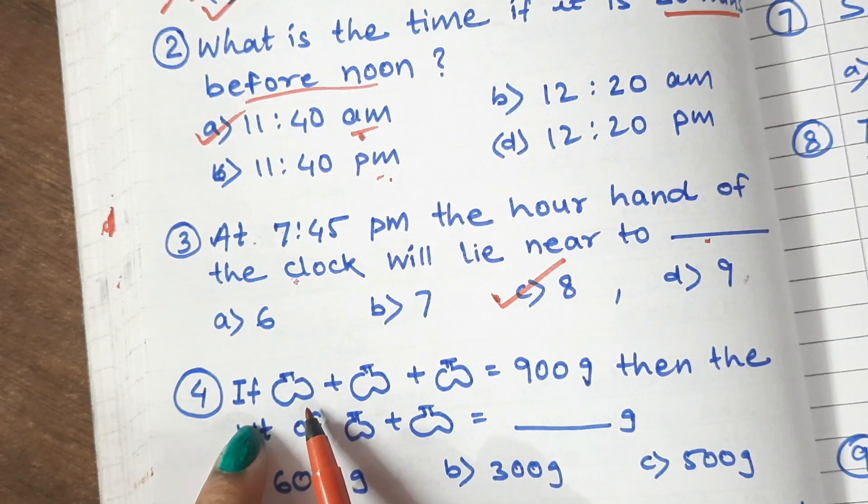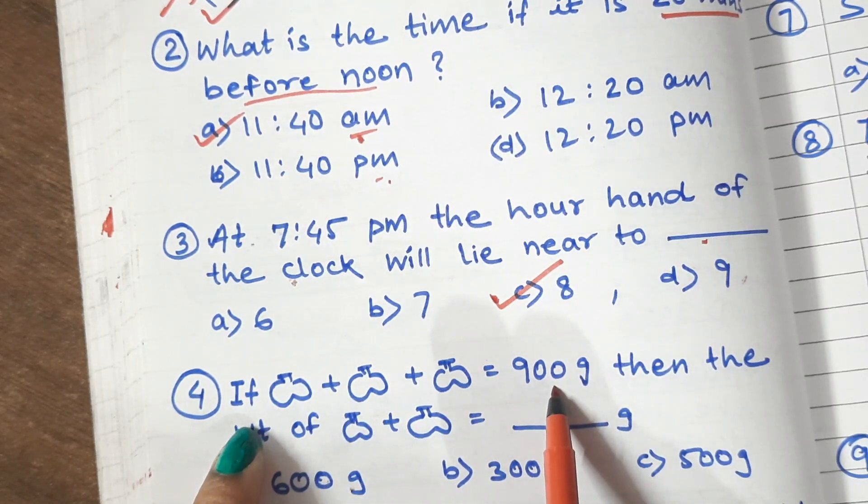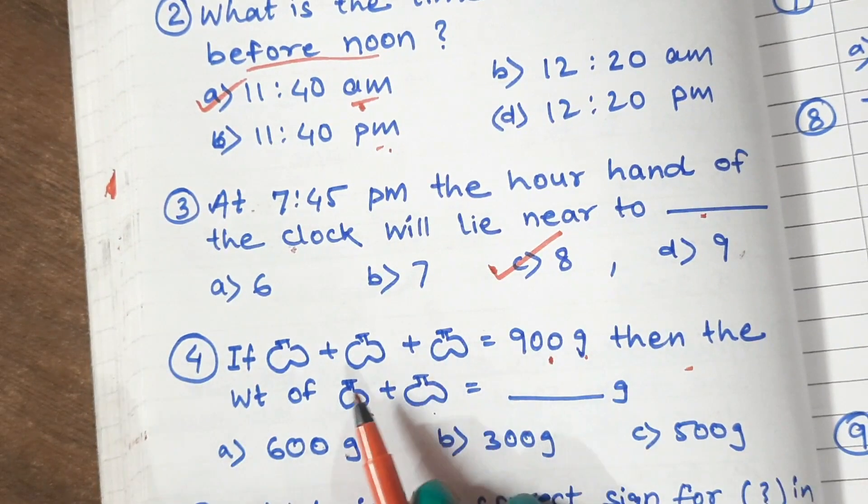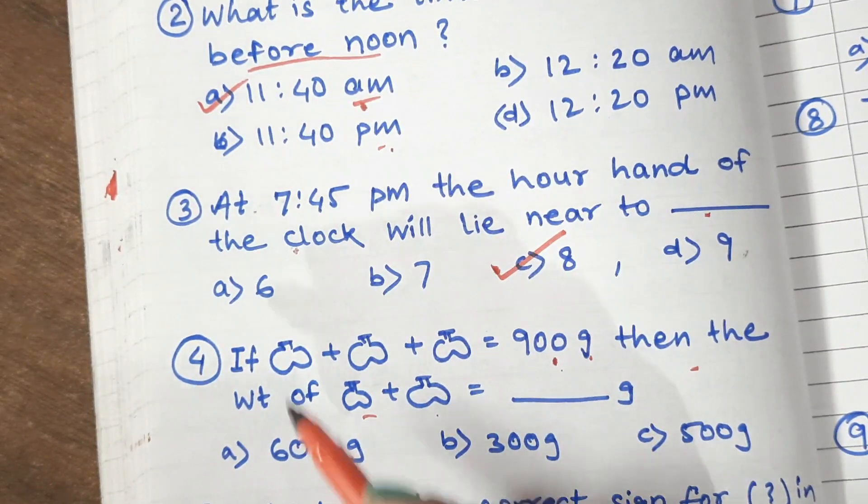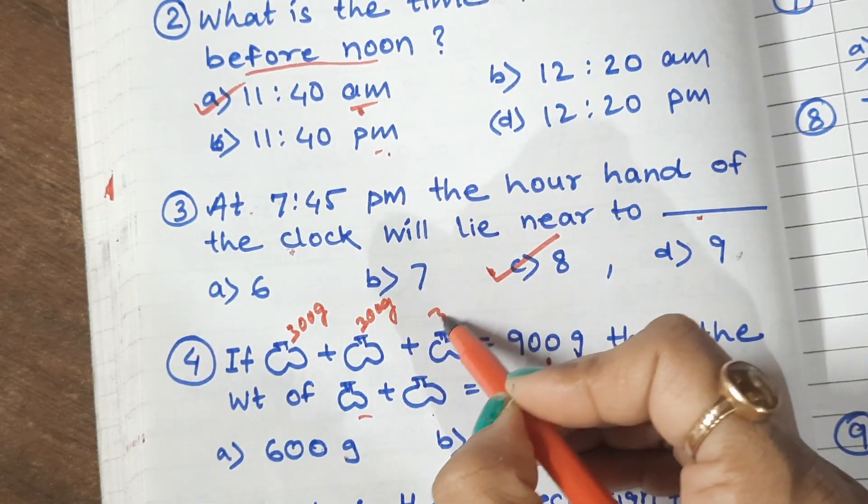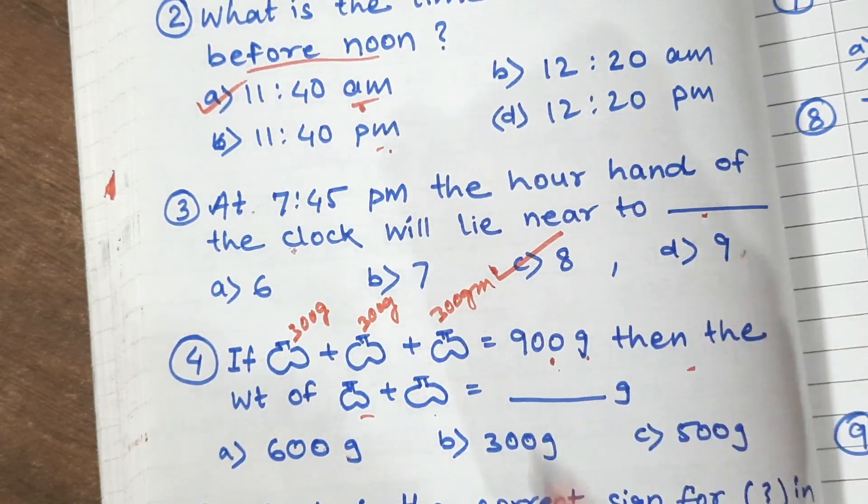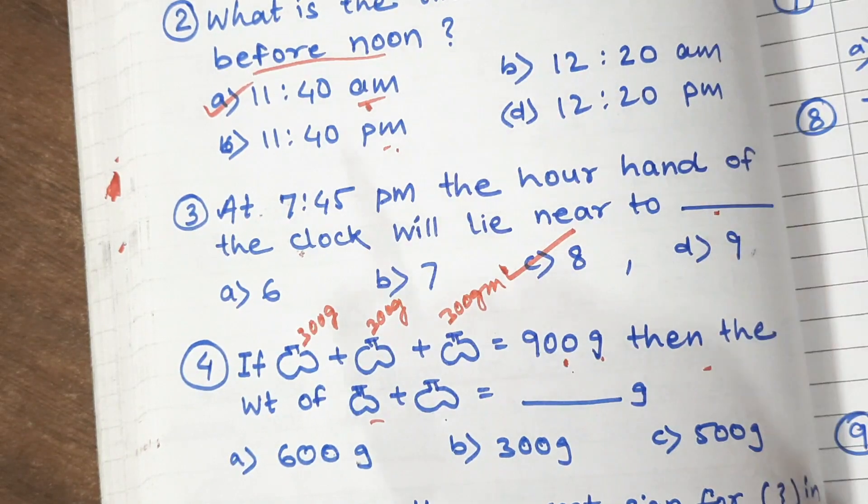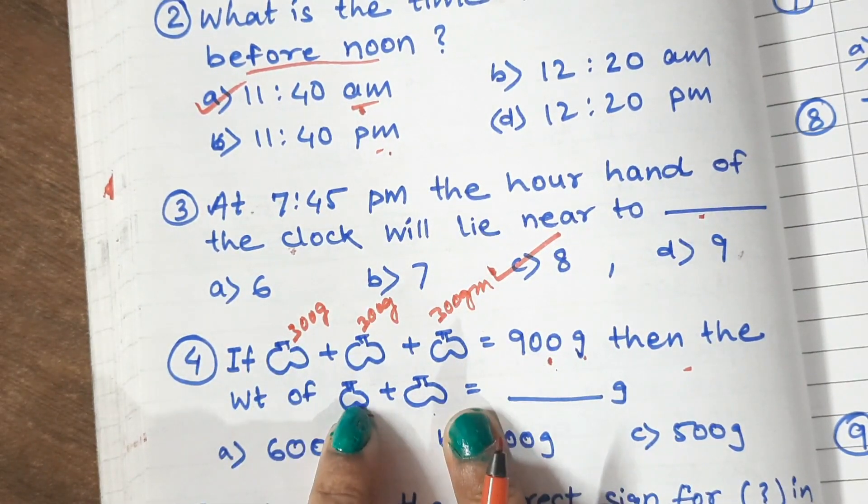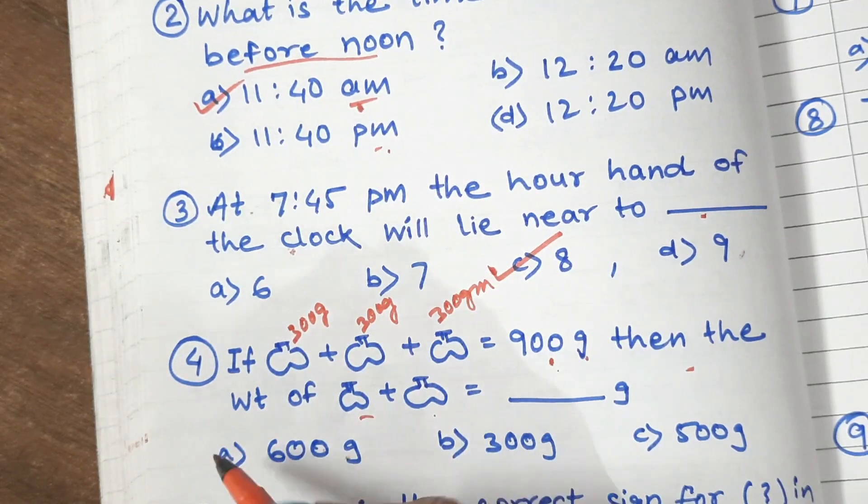Question 4: If 3 apples equal to 900 gram, then the weight of 2 apples is dash gram. Now, the weight of 3 apples is 900 gram. So each of the apples will be how many grams? 300 grams. This is a simple addition for the child. And this will come from practice. This way, the weight of 1 apple is done. Now 2 apples are asking. So 300 plus 300 is 600.